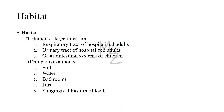Habitat: Humans are the hosts of Serratia marcescens. It is frequently found in the large intestine but is also present in the respiratory tract and urinary tract of hospitalized adults, the gastrointestinal system of children, and in damp environments like soil, water, bathrooms, dirt, and the subgingival biofilm of teeth. If you see something red in your bathroom, it is likely Serratia marcescens.